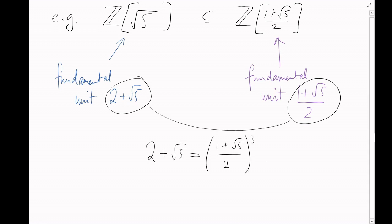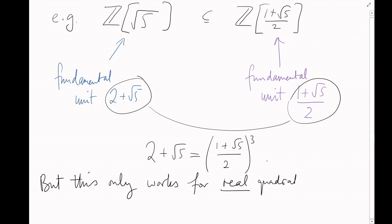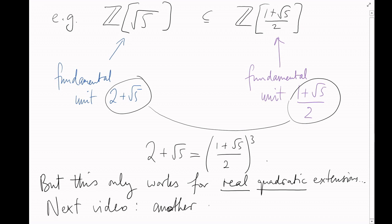Note that our method was very specific to real quadratic extensions. Calculating the units of other number rings — for example cubic extensions — is in general still very hard. For most rings, this is usually an open problem. Next video, we'll see an application of Pell's equation of a completely different kind.